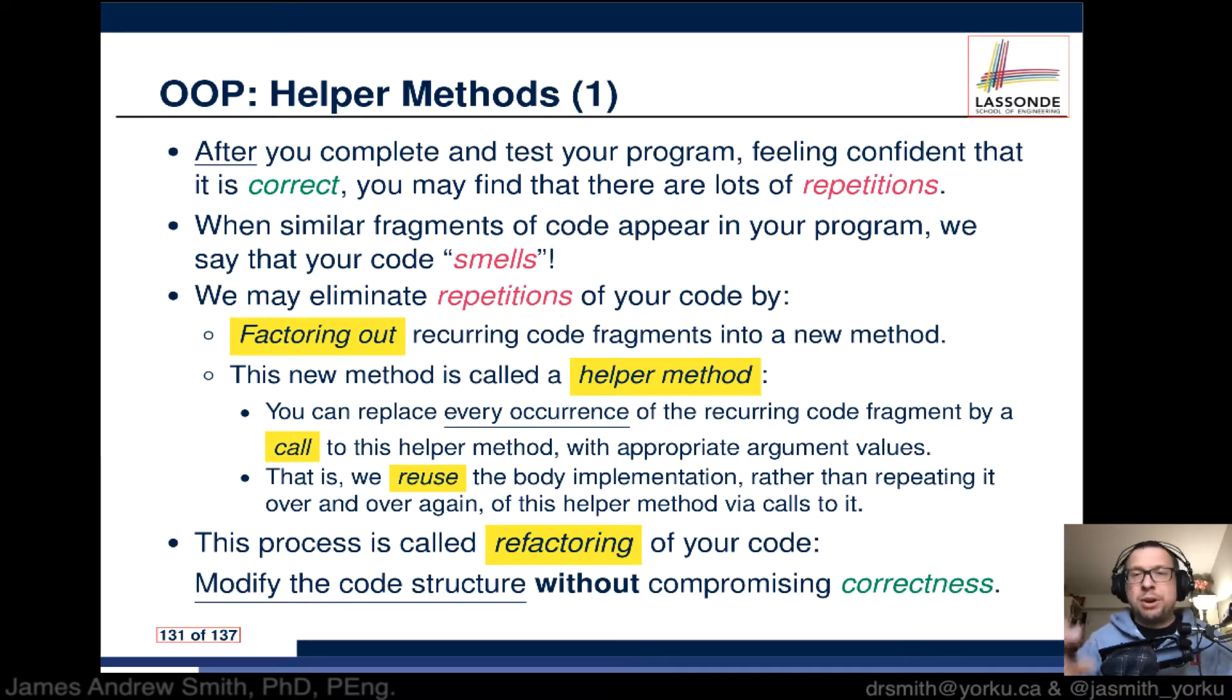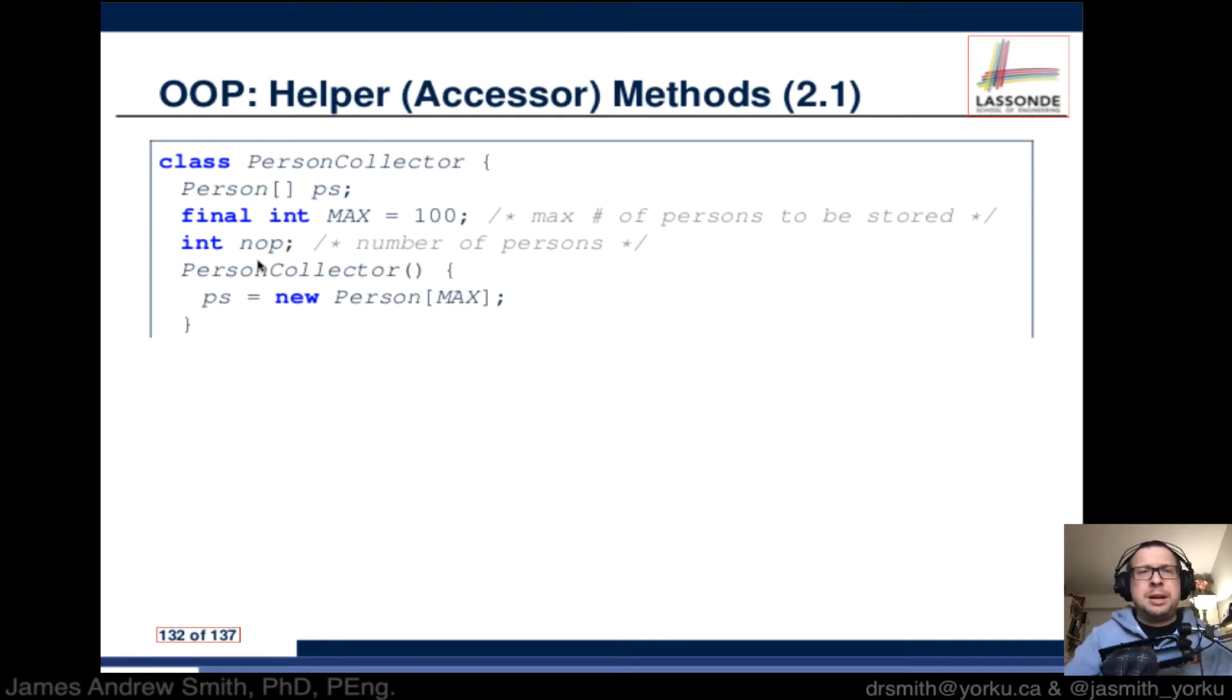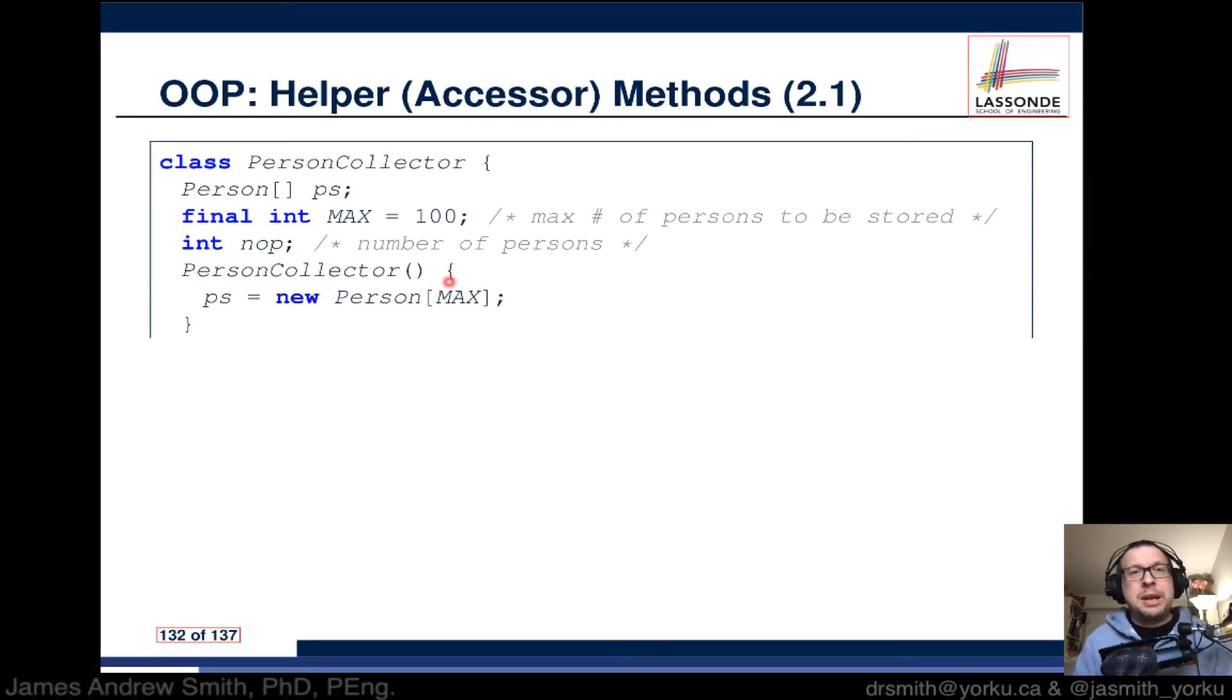Here's an example. We have a class called PersonCollector. Inside of it we have an object called ps which is an array of type Person. We have attributes like MAX equal 100 and number of persons nop as an integer. We've got a constructor that sets up your array ps based on the maximum number of an array of type Person.